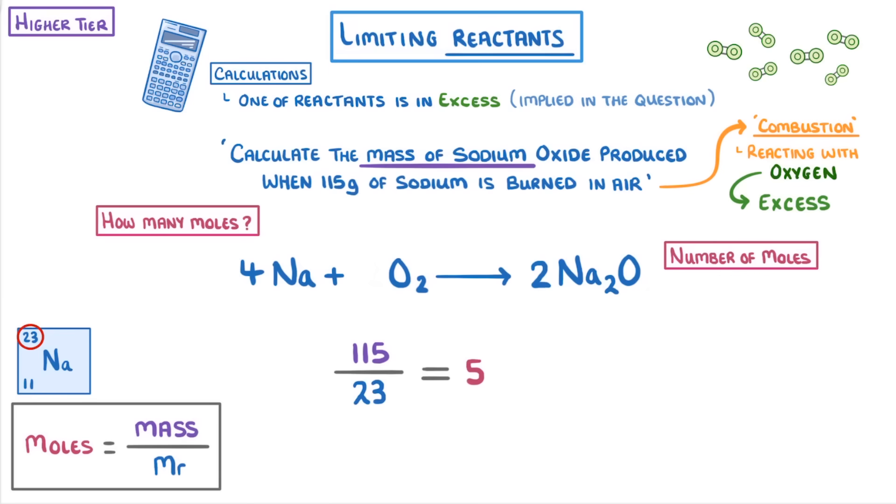Then by looking at our balanced equation, we can find the ratio between the sodium and sodium oxide, which is 4 to 2, or more simply, 2 to 1. And so if we use 5 moles of sodium, we know we must produce 2.5 moles of sodium oxide.